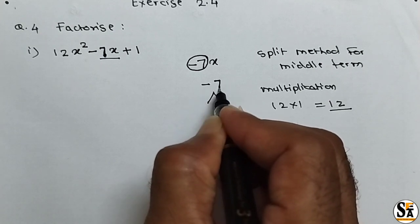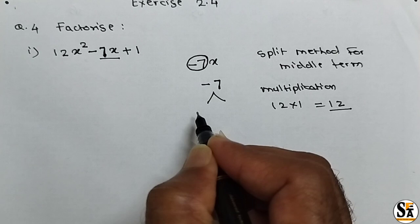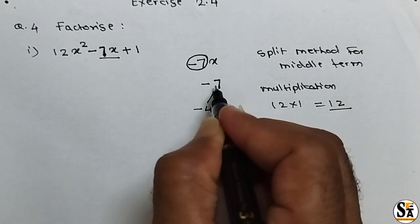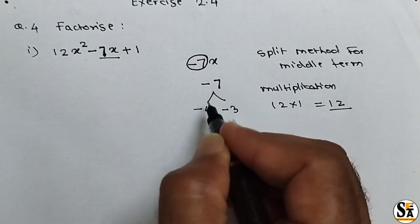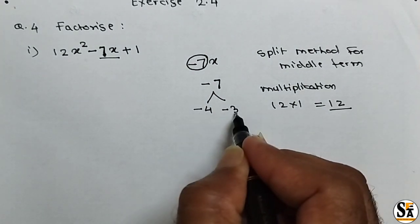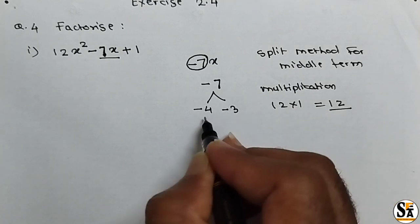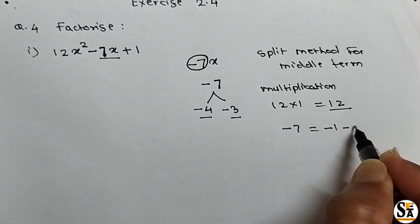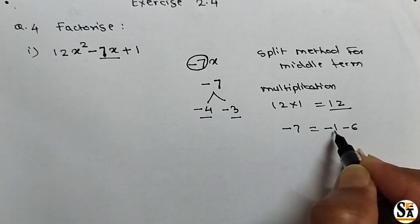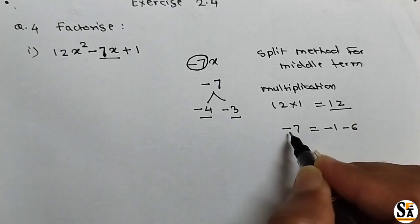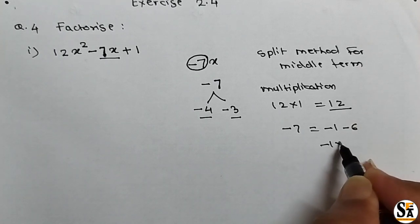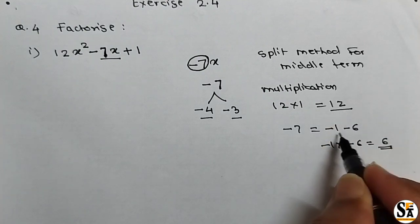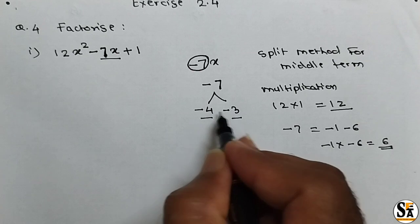Which are the factors? Minus 7 can be written as minus 4 plus minus 3. See here: minus 4 and minus 3, their addition is minus 7 and their multiplication, minus 4 into minus 3, is 12. So this condition is satisfied. Also, minus 7 can be written as minus 1 plus minus 6, where addition is minus 7, but multiplication of minus 1 into minus 6 equals plus 6, not 12. So those factors are not useful. Only minus 4 and minus 3 are the correct factors.